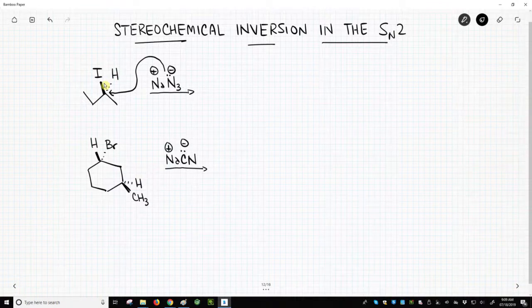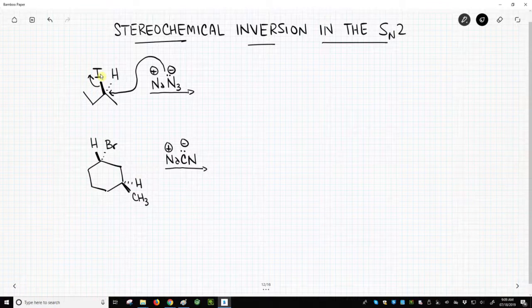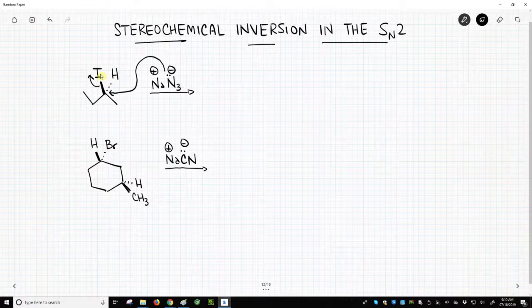It attacks from the back side because it will eject this iodide. So both those arrows occur at the same time. People call this backside attack or attack from the back face of your electrophilic carbon.